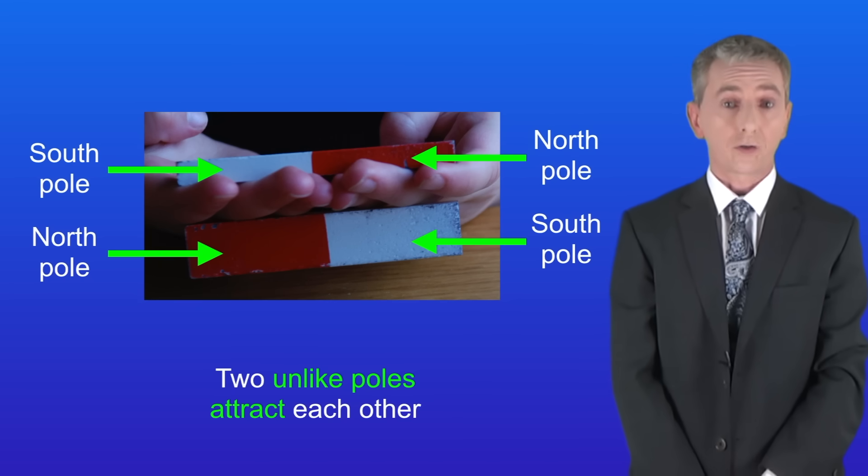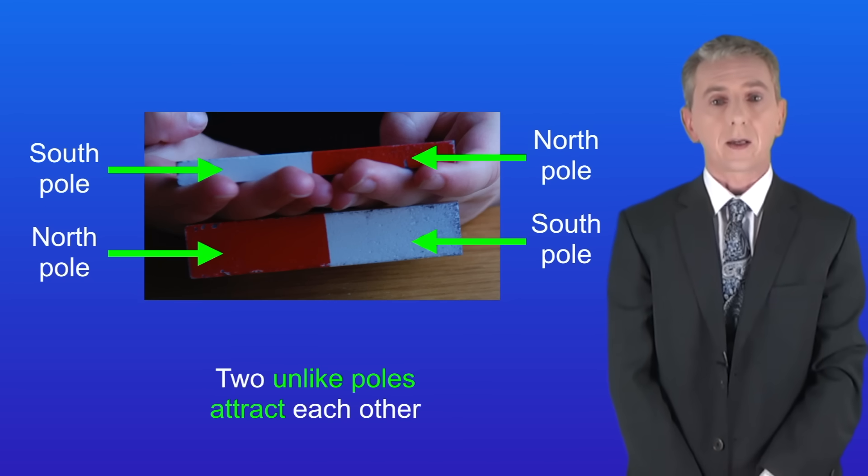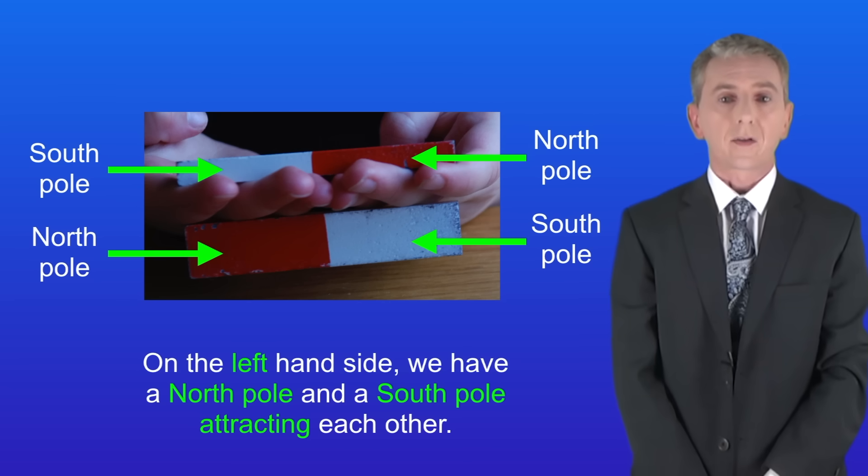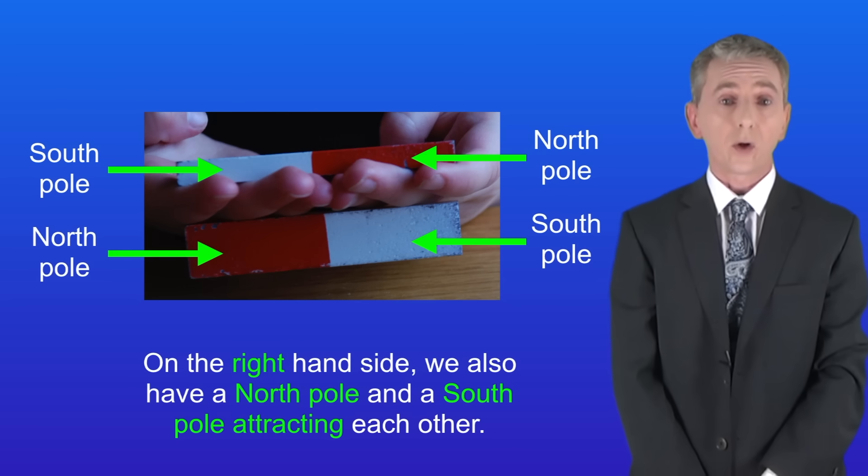Two unlike poles attract each other. On the left hand side we've got a north pole and a south pole attracting each other and on the right hand side we also have a north pole and a south pole attracting each other.